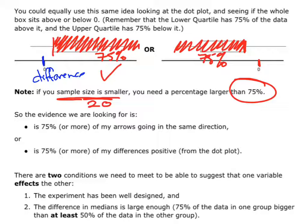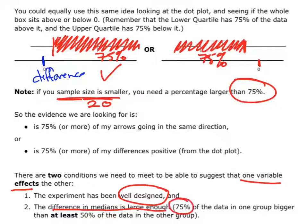In order to say that one variable affects the other, we need two things: we need our experiment to have been designed well — that's quite important — and the other thing is that the difference in the medians is large enough, and that's when we talk about that 75%.